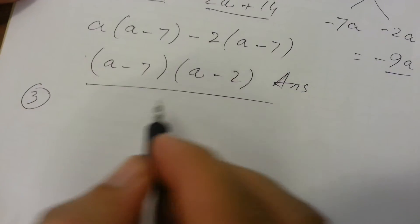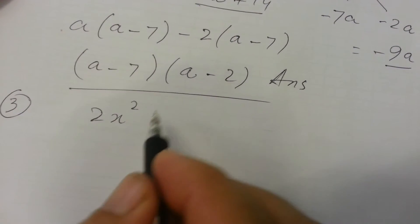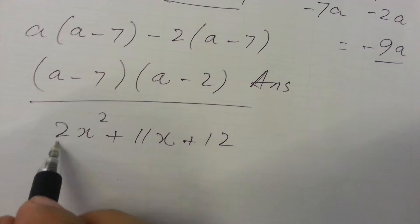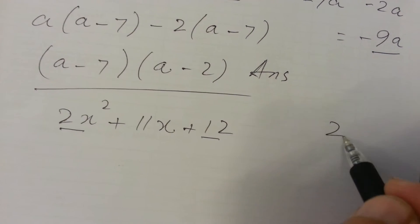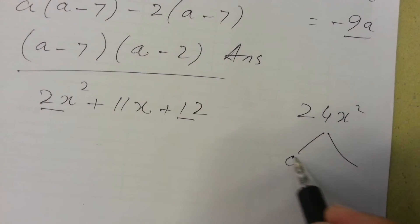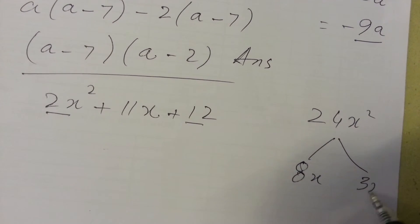Question 3: 2x squared plus 11x plus 12. Multiplying first and last term we get 24x squared. There are two numbers will be 8x and 3x.